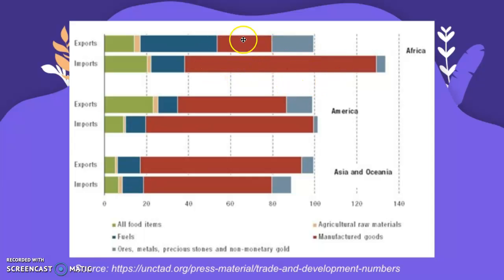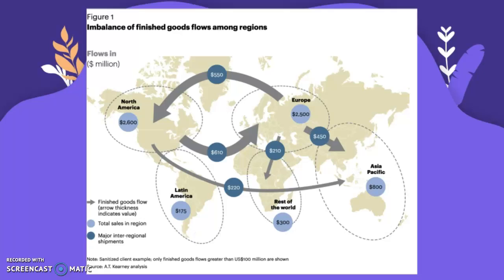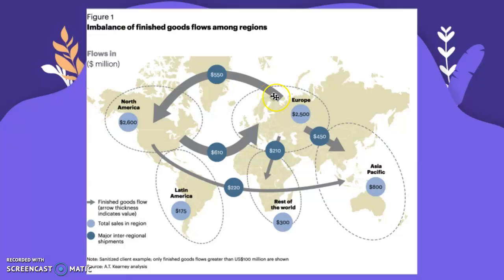Africa has to import a significant amount of manufactured goods because it doesn't produce that much, producing more fuels instead. Looking at finished goods — manufactured goods flows — the highest flow is from Europe to North America and North America to Europe, probably due to trade agreements between these continents. There are also large flows from Europe to Asia Pacific, and smaller flows from North America to Asia and Europe to Africa.